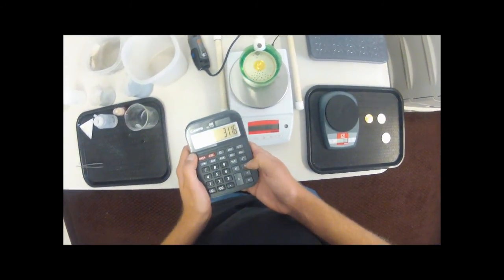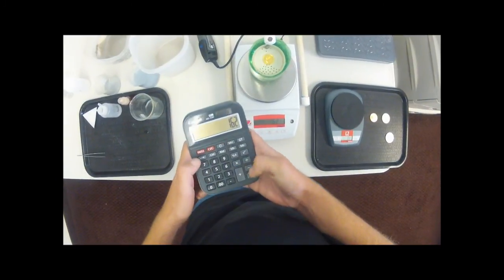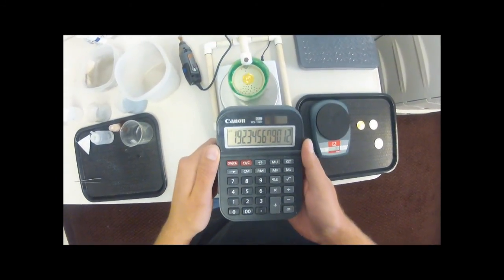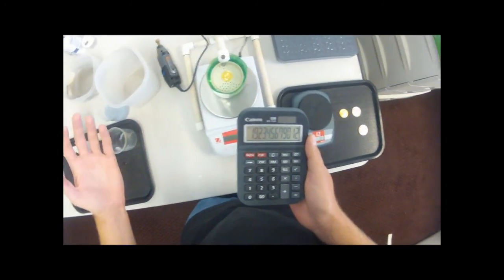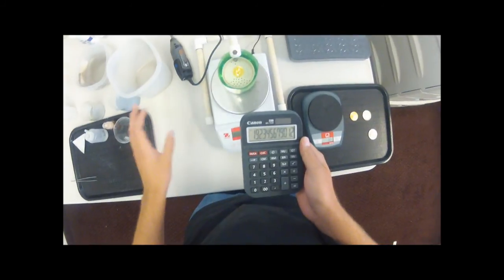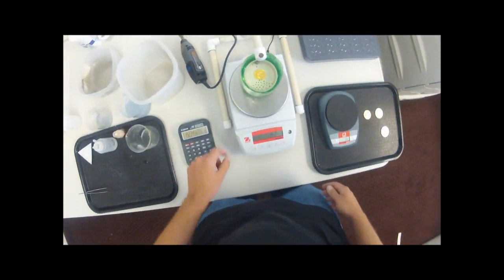So we'll take the weight and divide it by how much water was displaced. There we go, 19.23. And that's 19.23 grams per cubic centimeter. So that's a perfect number for pure gold. 19.2 is what we want to see.